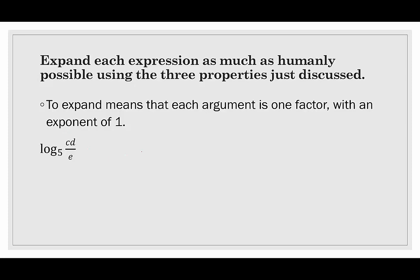One more example: we have log base 5 of c times d over e. Here we have same base multiplication in the numerator, so everything's going to be positive. We can split this up by saying log base 5 of c plus log base 5 of d. And then, since this is all divided by something, we would subtract that one: minus log base 5 of e.